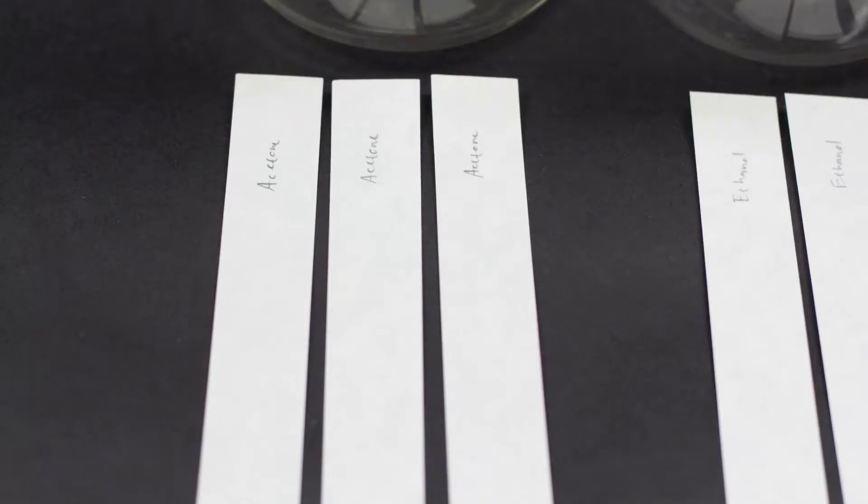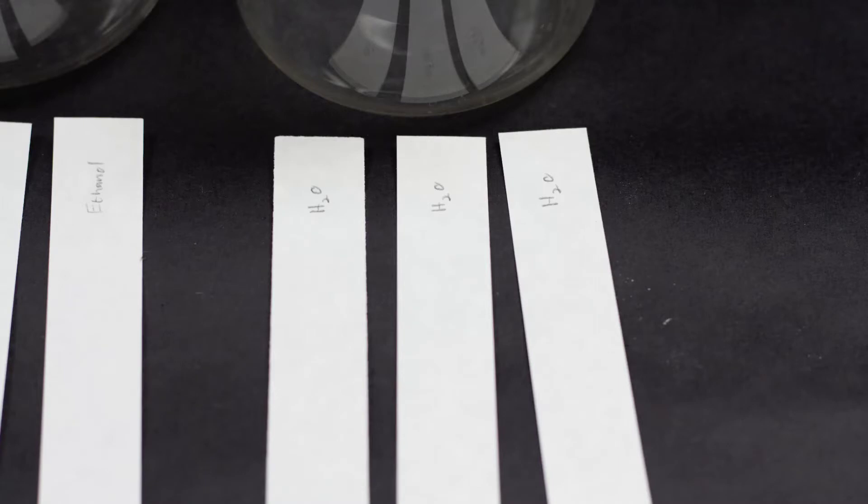Label three of the papers water, three of them acetone, and the other three ethanol. So we'll be using three papers for each solvent.